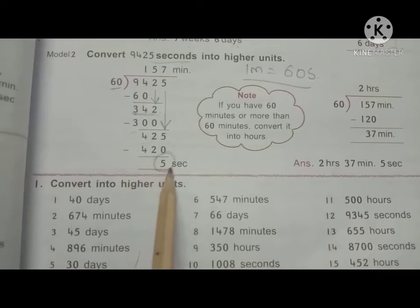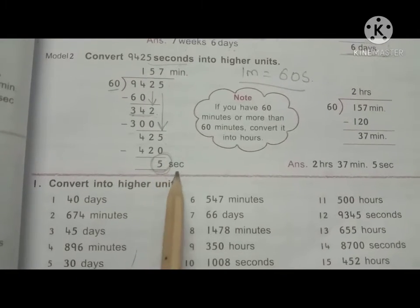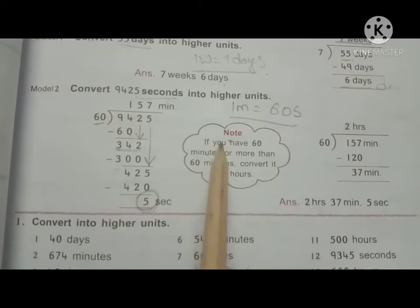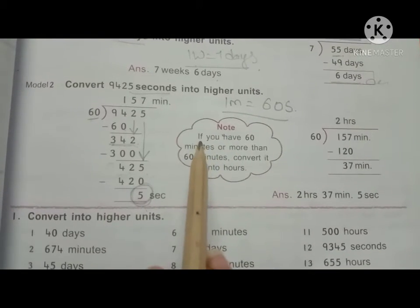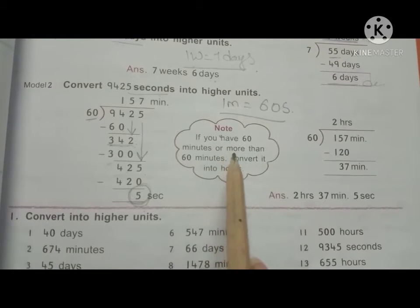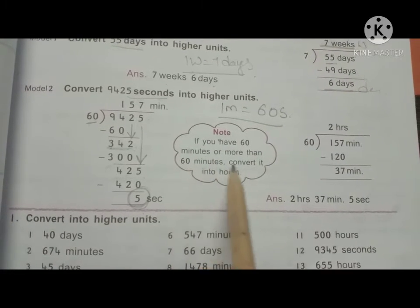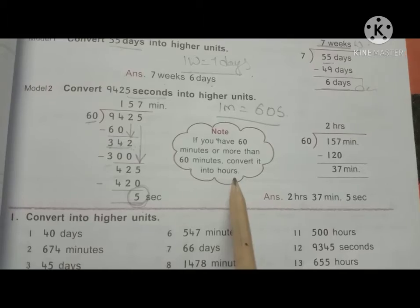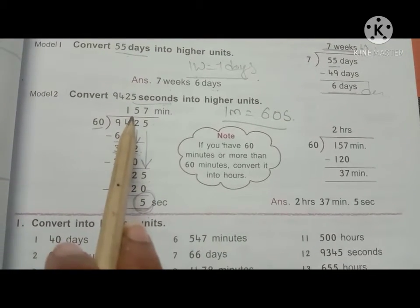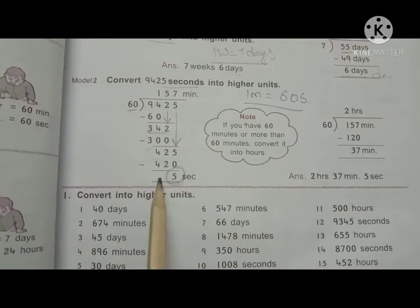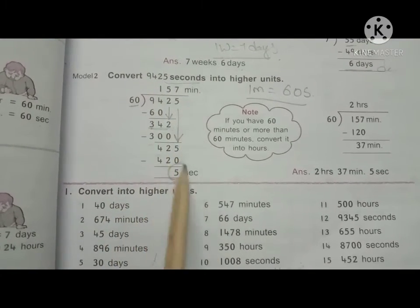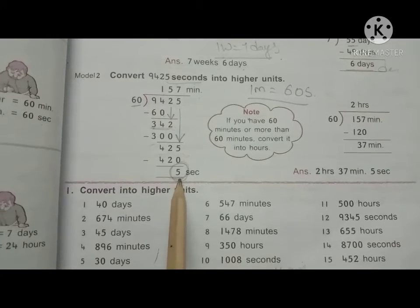The remainder is 5 seconds. Now, the quotient from dividing 9,425 by 60 gives us 157 minutes. If we have 60 minutes or more than 60 minutes, we convert it into hours. How many minutes do we have here? 157 minutes. And 5 seconds remain.